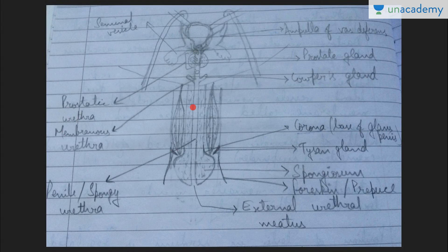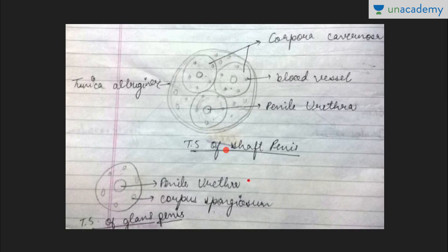In the cross-section of the penis, the penile urethra — also called spongy urethra — is visible, along with the external urethral meatus. The corpus spongiosum surrounds it, and the two cylinders of corpora cavernosa are also shown. In the shaft, there are corpora cavernosa and corpus spongiosum covered by the tunica albuginea. In the glans penis, only corpus spongiosum is present. Corpus spongiosum is in the mid-ventral portion, and corpora cavernosa is in the dorsolateral portion.